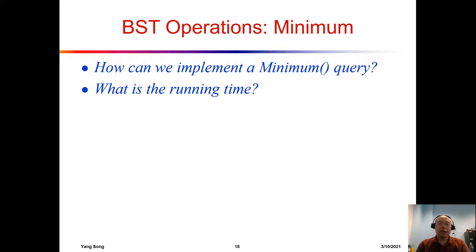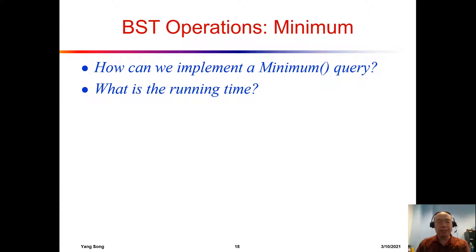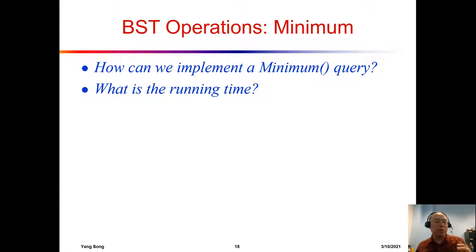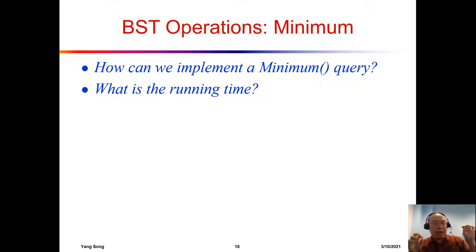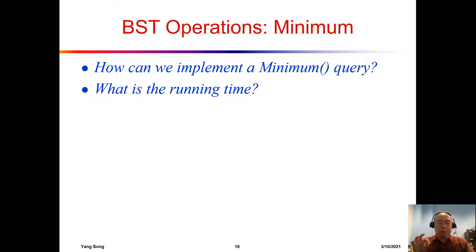In this video we are going to talk about deletion, but there is just a small unfinished discussion about the minimum. We have already talked about minimum. To get a minimum of a BST, we want to start from the root, go left, go left, and go left. And when there is no left subtree to go, we stop there and that is the minimum.